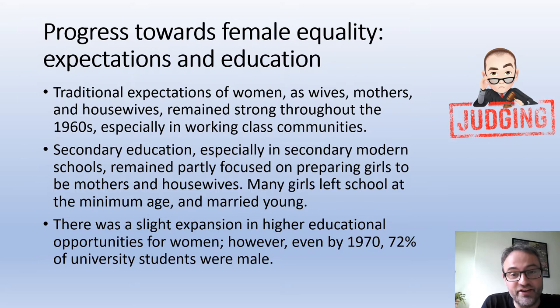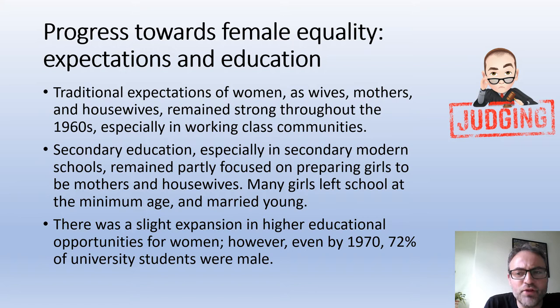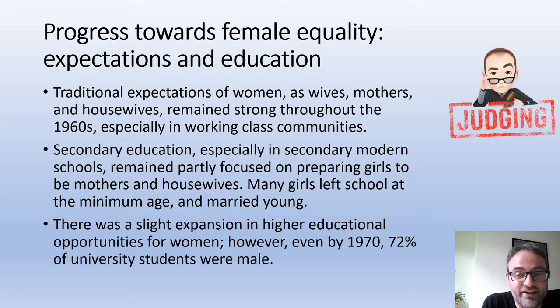As we move into the 60s, even towards the 70s, those traditional gender stereotypes remained pretty powerful. We can see that particularly when we look at secondary education. If you were a girl at a grammar school, but even more so at a secondary modern school, you wouldn't be hugely encouraged to do anything academic beyond the age of 15. In secondary modern schools, the curriculum for young women focused on domestic science, including cooking and needlework.